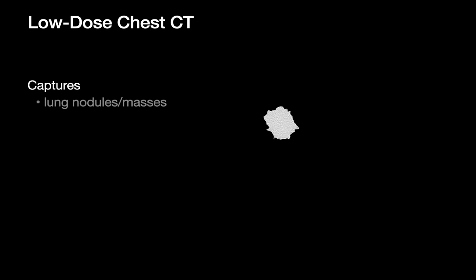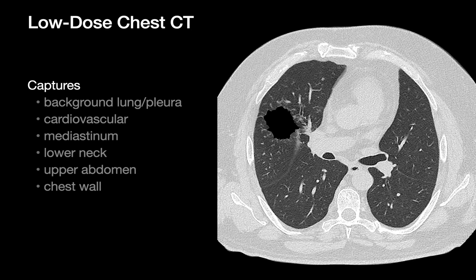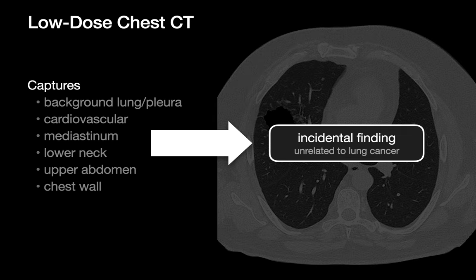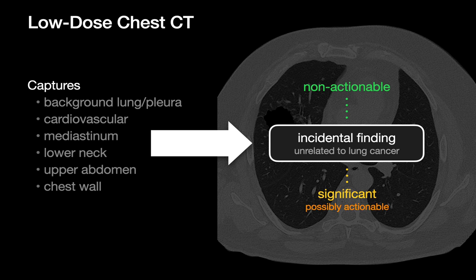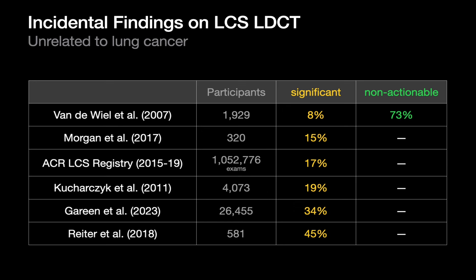Since an LDCT captures not only lung nodules and masses, but all of their surrounding anatomy, it's pretty common to encounter incidental findings unrelated to lung cancer on a lung cancer screening study. Some incidental findings are non-actionable, and some are significant. According to the American College of Radiology's Nationwide Lung Cancer Screening Registry, one out of every five incidental findings is significant, and the ones that are new or not previously documented will usually be actionable. Significant incidental findings have been reported to occur in 8 to 45 percent of lung cancer screening studies, and may occur even more frequently than 45 percent based on anecdotal reports when you're going by the book.